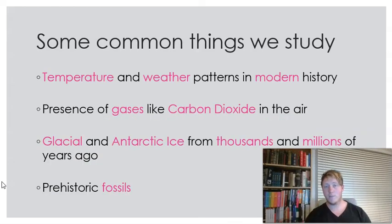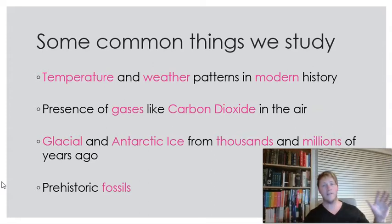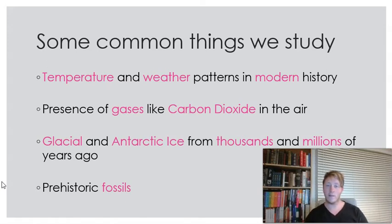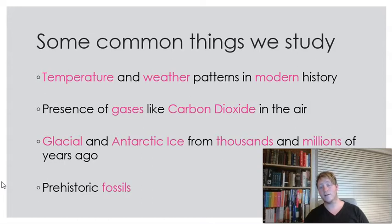Here are some of the key things that we would be looking for if we wanted to examine and investigate climate, whether that's now or in the past, beyond our human reaches and our current measuring ability. We're looking for temperature and weather patterns in modern history. We're looking for presence of gases like carbon dioxide in particular. We're looking at analyzing glacial and Antarctic ice from thousands and possibly millions of years ago. And we can also look at things like prehistoric fossils, though we won't really be talking about that in today's lesson.